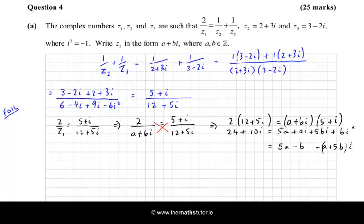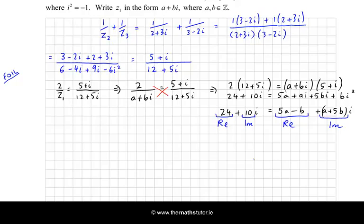So what we have now is we have this is real, and this is imaginary. And on the left-hand side we have 24 plus 10i, and of those, we also have that the 24 is real and the 10 is imaginary. So we match the two real parts and match the two imaginary parts, and we should get two simultaneous equations. So the first equation is 24 is equal to 5a minus b, and the second equation is 10 is equal to a plus 5b.